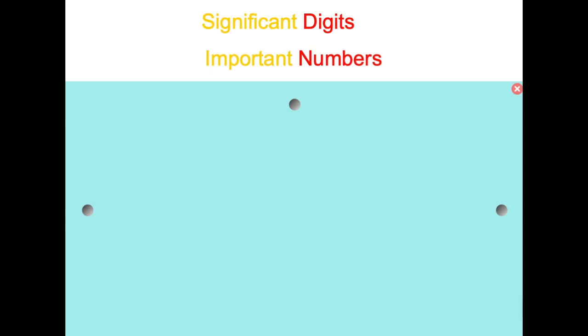Okay, welcome to another tutorial. This one is on significant digits. As you can see, I've color-coordinated the translation: important numbers.